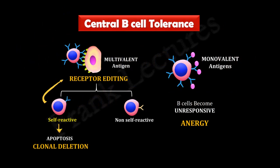In the previous video lecture, we studied three main mechanisms of central B cell tolerance. Autoreactive B cells may survive through receptor editing, undergo clonal deletion, or become anergic.